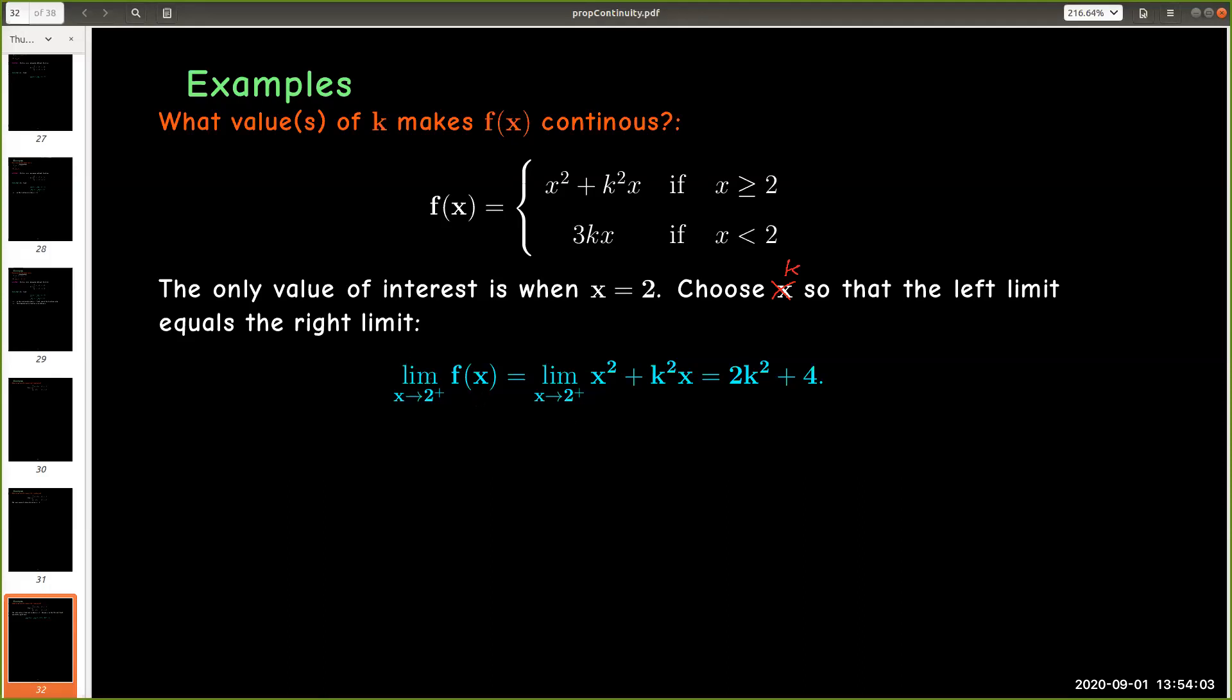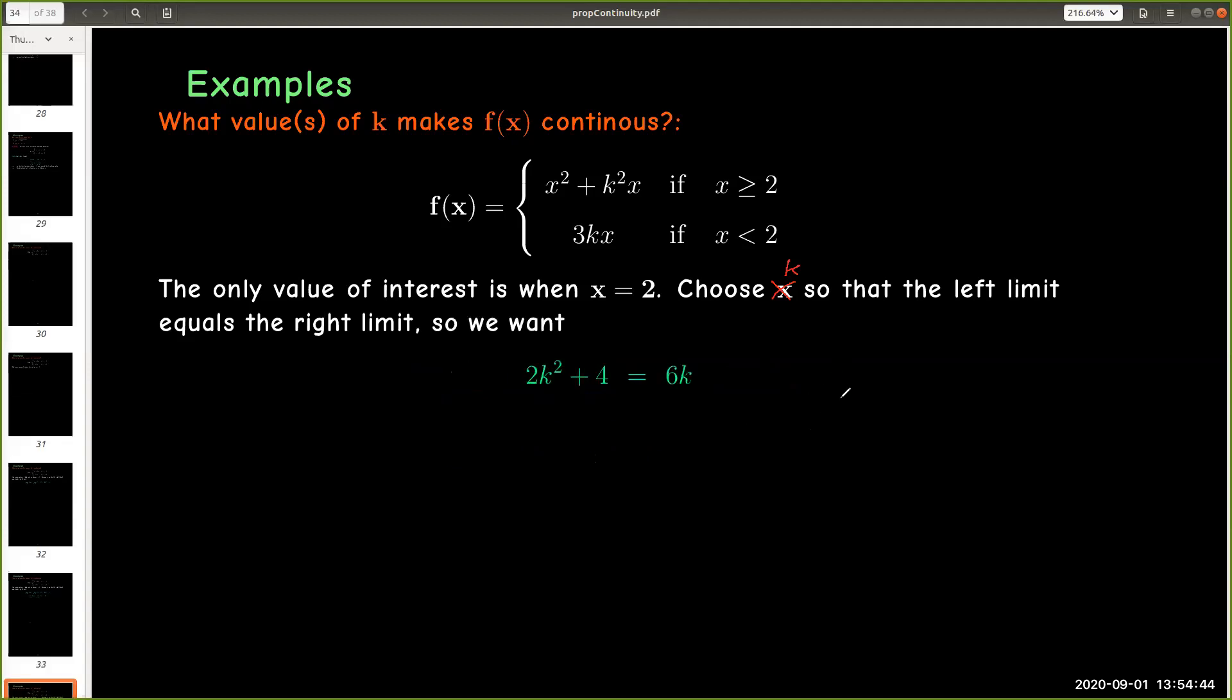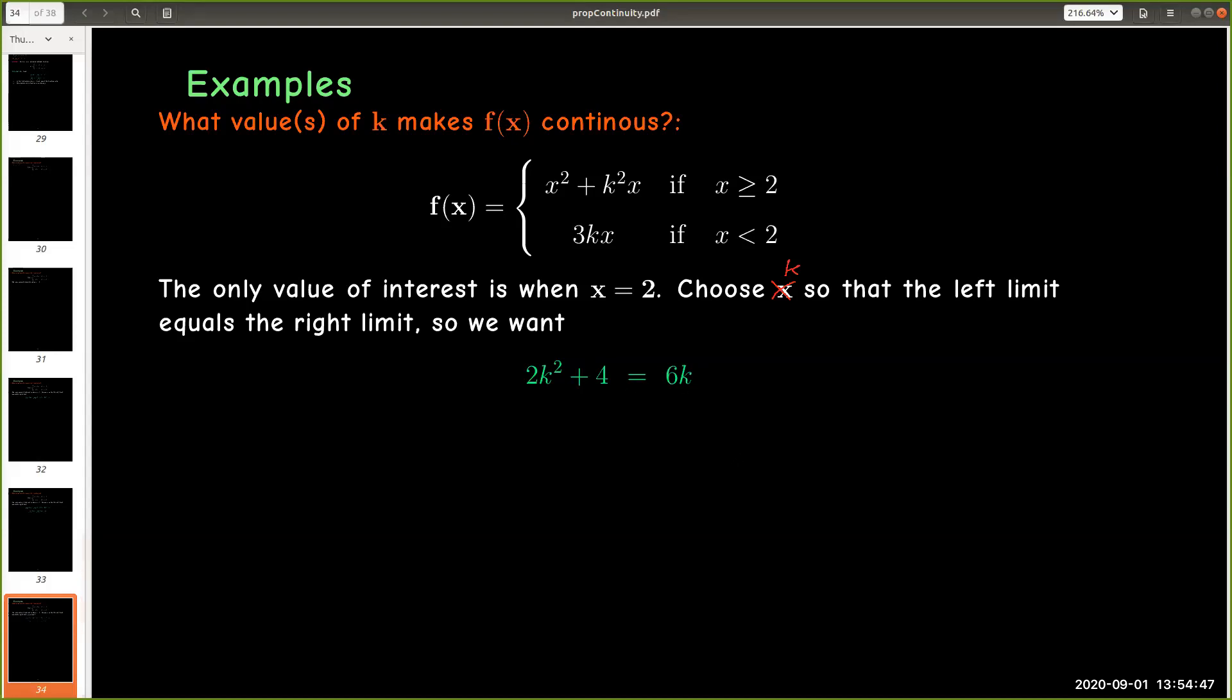All right, now if I evaluate the right limit, I can go ahead and use direct substitution, put 2 in the place of x and the result is a formula in k. That's how I got 2k squared plus 4. I just replaced x with 2. And then the left limit, again, I can just use direct substitution, replace x with 2, and I'll get a different formula in k. And so if I want these two to match up, then the left limit will have to equal the right limit. I'll have to set these two formulas equal to each other, and then solve.